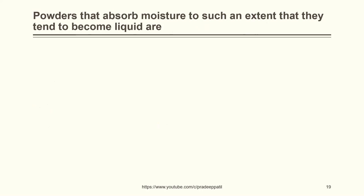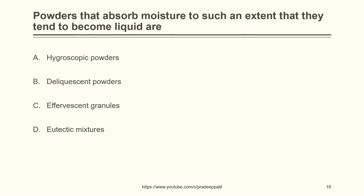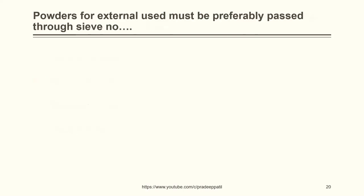Powders that tend to absorb moisture to such an extent that they tend to become liquid are: hygroscopic powders, deliquescent powders, effervescent granules, or eutectic mixtures. The correct answer is deliquescent powders. Powders for external use must preferably pass through sieve number: 10, 20, 45, or 85. External use powders must be very fine and not gritty, to keep the smooth texture intact. So the answer is sieve number 85.